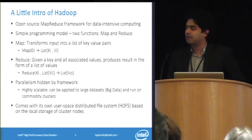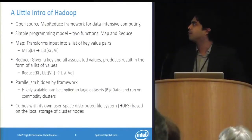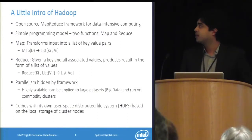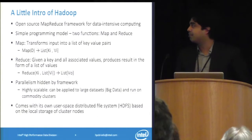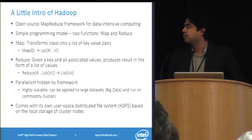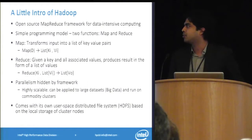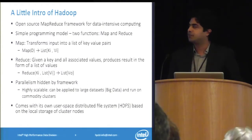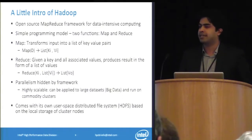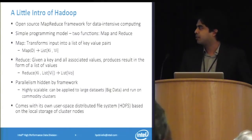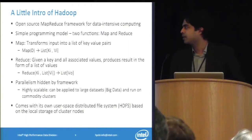It's a very simple programming model — it's functional. You have two functions: map and reduce. You feed your raw data into a map function, it does some processing, and emits a key-value pair. The framework then hands over this intermediate key-value pair to the reduce function, which gives you your final output. It's a very simple framework and all the complexity is hidden by Hadoop, which does most of the heavy lifting.